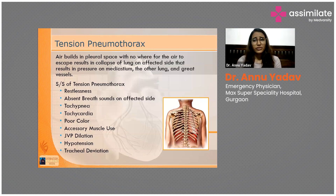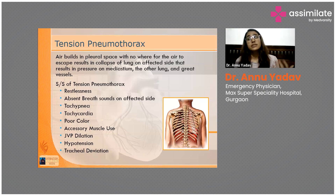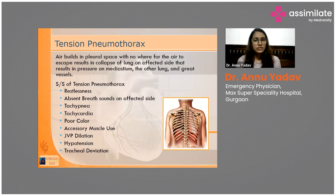The signs and symptoms of tension pneumothorax: the patient will be very restless, there will be absent breath sound on one side, tachypnea, tachycardia, and possibly cyanosis. You will be able to appreciate that the patient is having so much breathing difficulty that they will be using accessory muscles. There will also be elevated JVP in these patients.